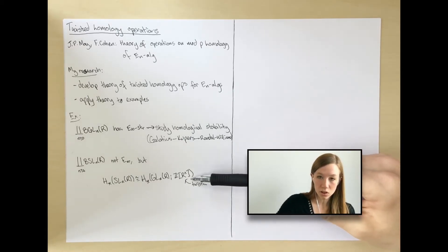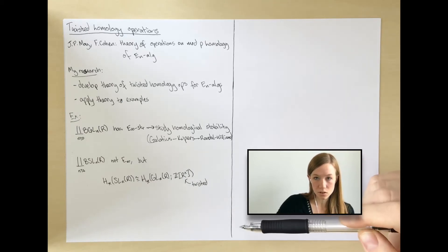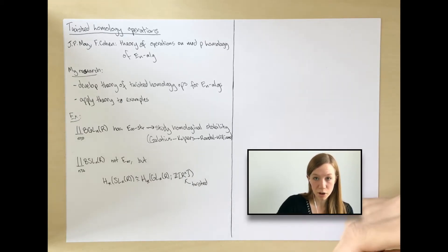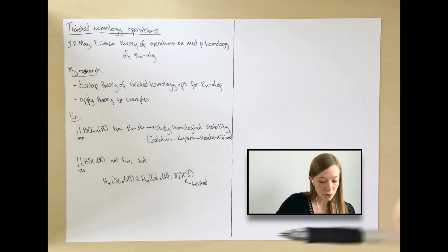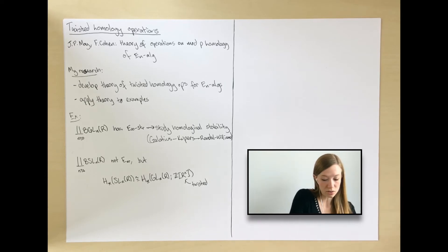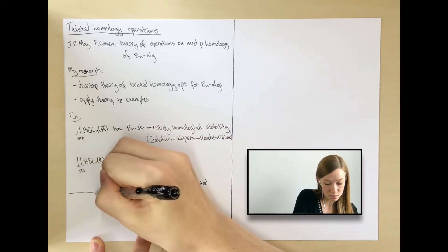But you do require this ingredient that you need to understand operations on homology with twisted coefficients. So my work provides that ingredient. I'm actually working on this example right now in a collaboration with Jeremy Miller and Peter Patzt. That's one example that this theory applies to, but I expect there to be lots of other interesting examples.